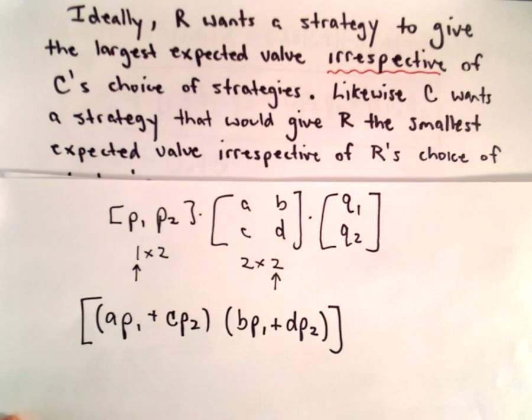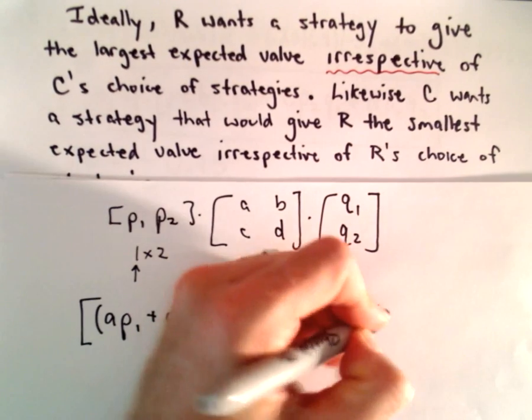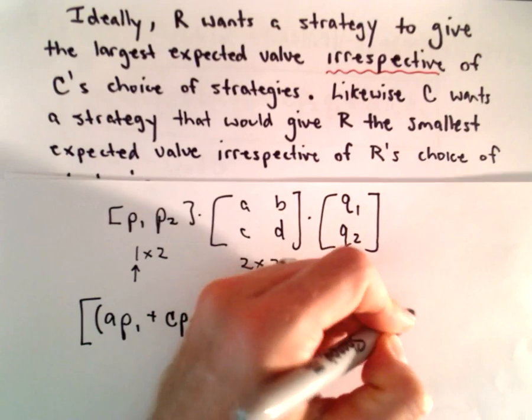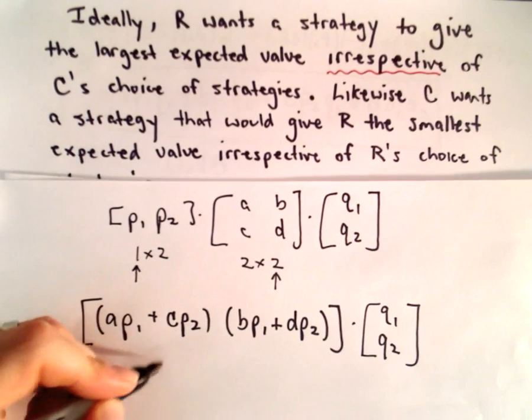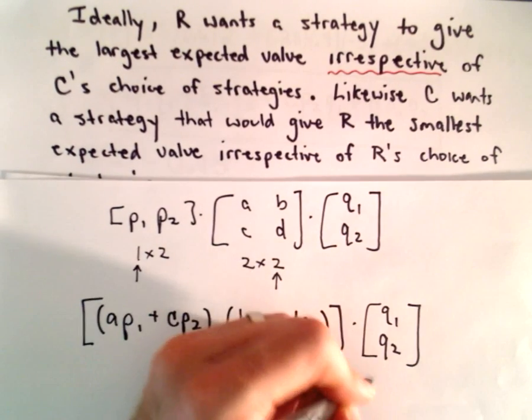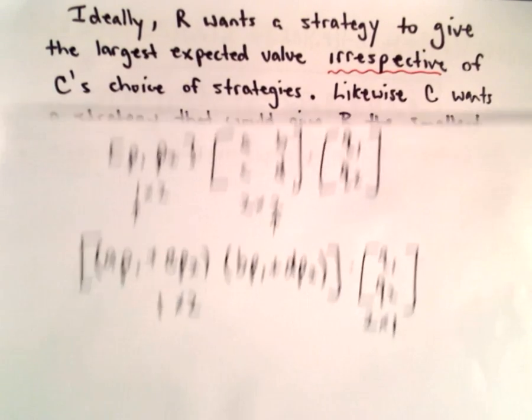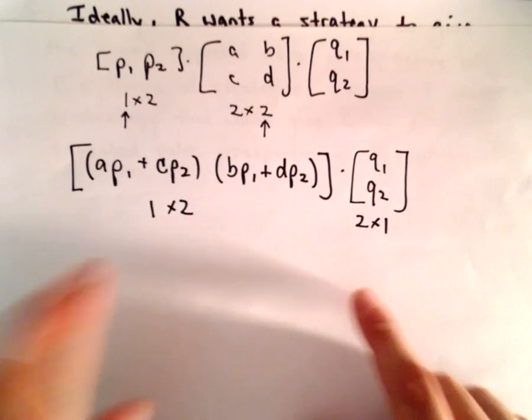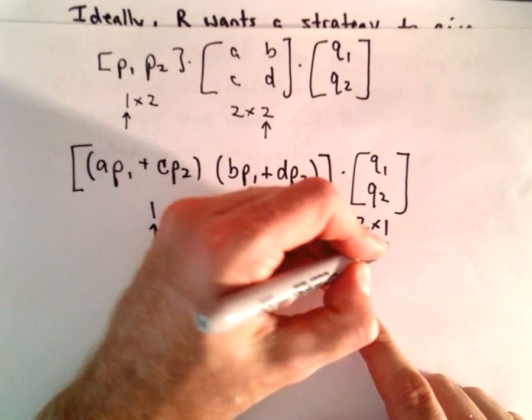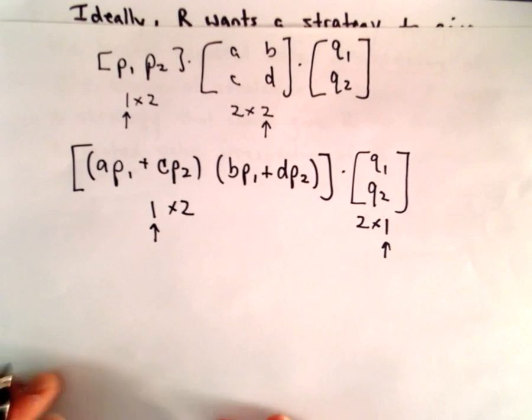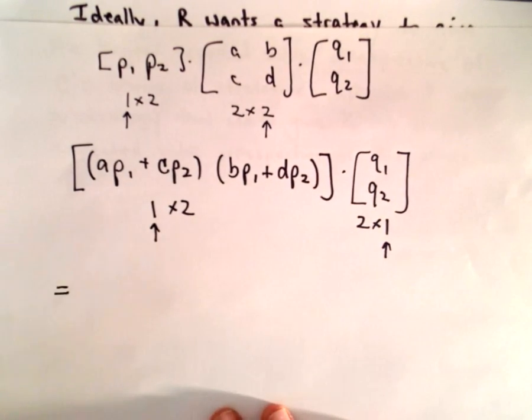Okay, so there's our 1 by 2 matrix. And again, now we just have to multiply this by Q1 and Q2. We've got a 1 by 2 matrix. This is a 2 by 1 matrix. Notice if we multiply these together, we're actually going to get a 1 by 1 matrix, so a matrix with just a single entry. And typically, we'll just simply write it where we don't even use the matrix notation.